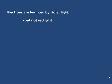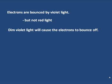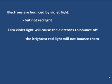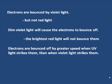Here's what had to be explained. First, electrons are bounced by violet light, but not by red light. Dim violet light will cause the electrons to bounce off, but not the brightest red light. And electrons are bounced off at greater speed when ultraviolet light strikes them than when violet light strikes them.